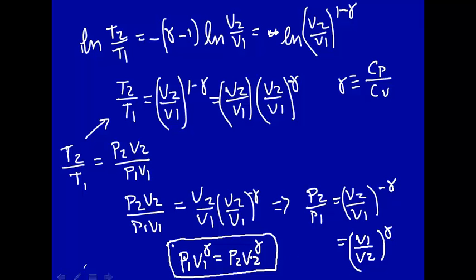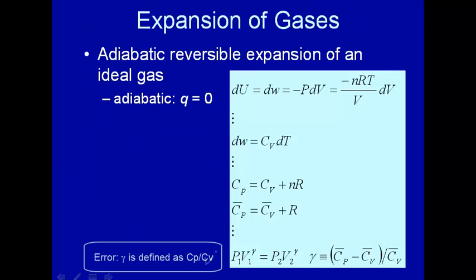But for an adiabatic reversible expansion of an ideal gas, P1 V1 raised to the ratio of heat capacities is equal to P2 V2 raised to the ratio of heat capacities. I think, I hope I convinced you of that down here. That's for an adiabatic reversible expansion of an ideal gas.